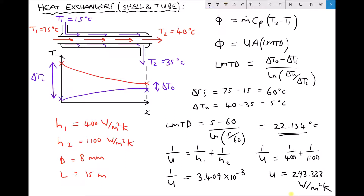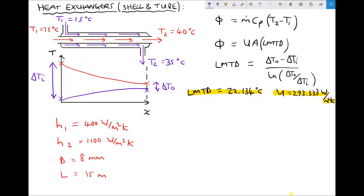Now let's transfer those values for LMTD and U to the top of the page and calculate the area and the rate of heat transfer. When calculating A, we're calculating the area in contact between the two fluids, which is the outside surface of the tube running through the centre of the heat exchanger.